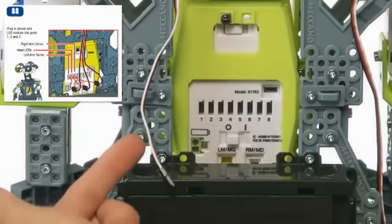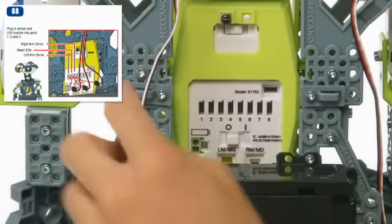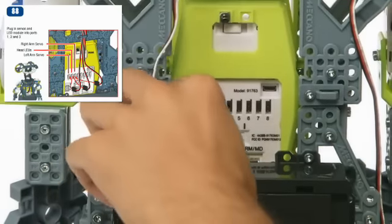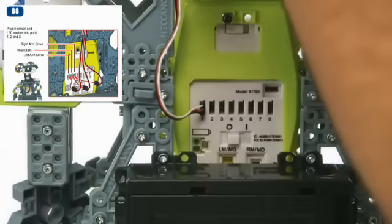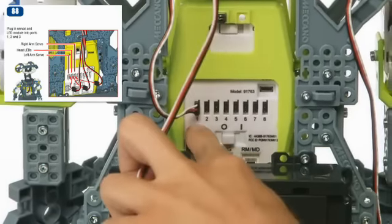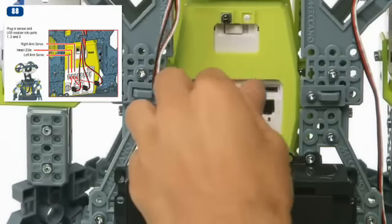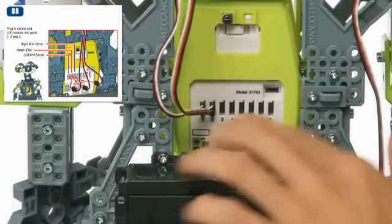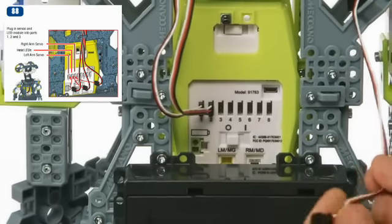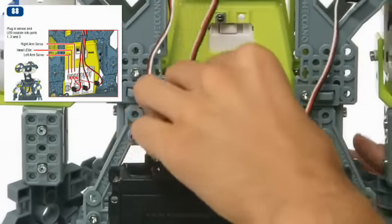Step 88, be sure the servo wires are inserted with the correct orientation, with the white wire facing up. Insert the left arm into port number 1, the eyes go into port number 2, the right arm goes into port number 3. For more details, check out our video on how to assemble the electronics.